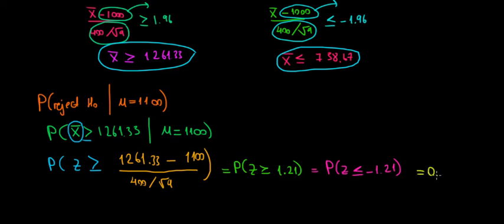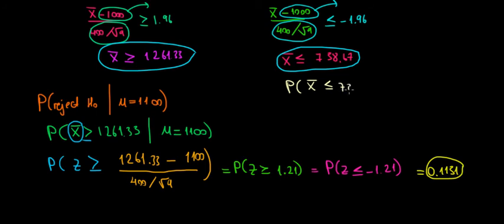That probability, by looking at the table, is going to be 0.1131. That's one part of the answer. With the same logic, we now find what is the probability of finding the sample mean less than 738.67 given that the true population mean is equal to 1100 liters.